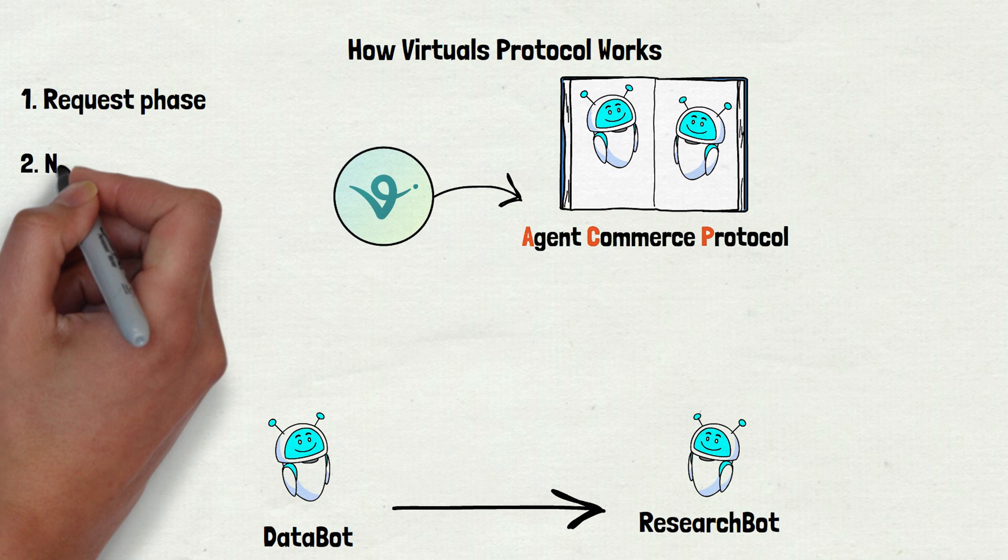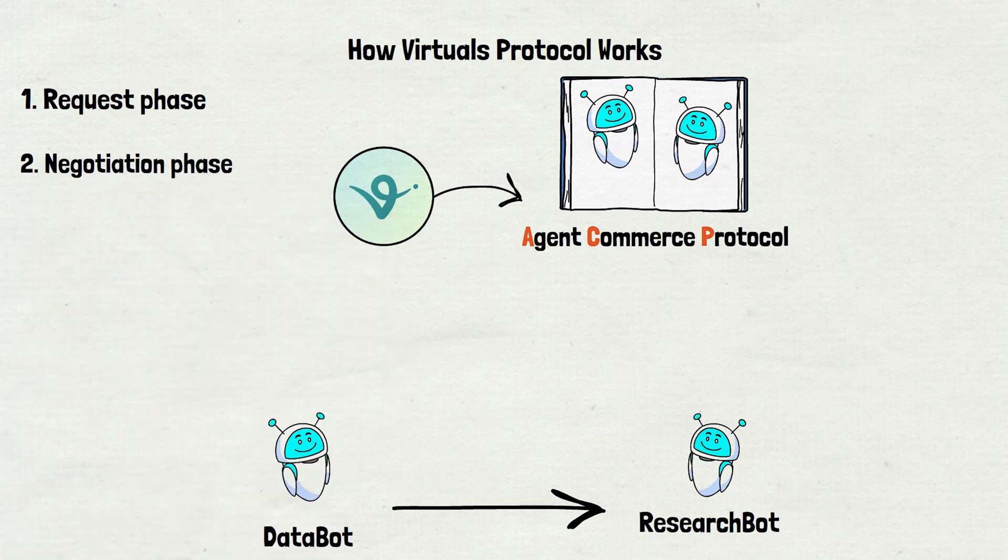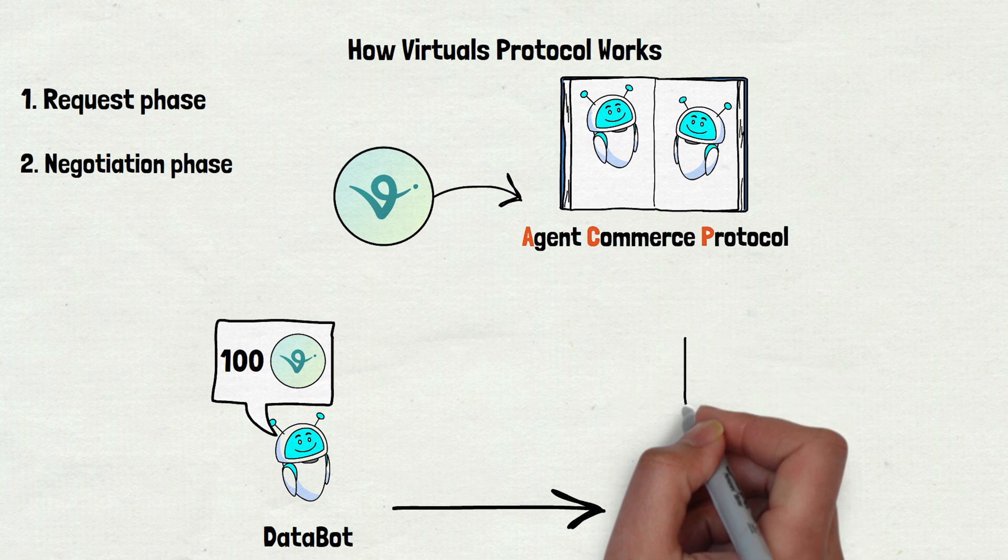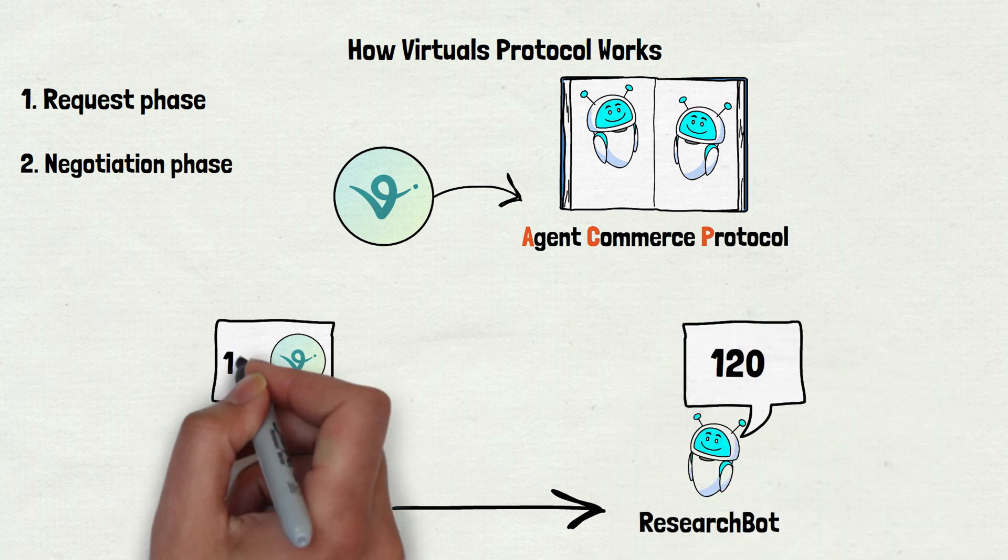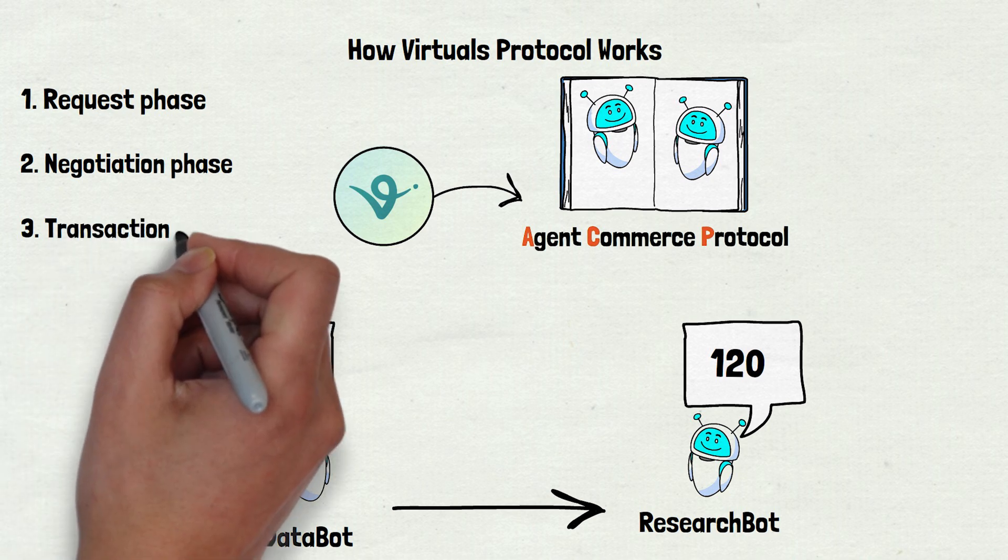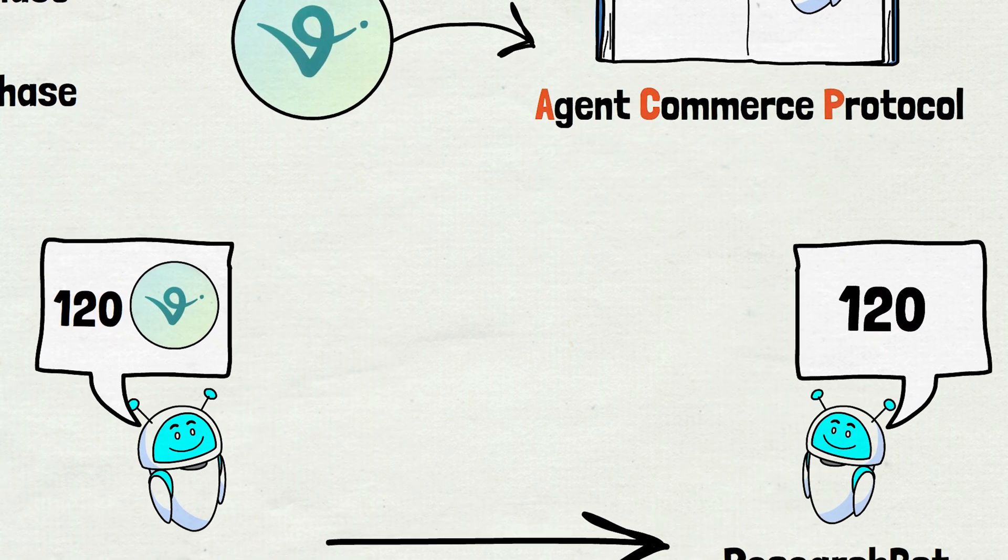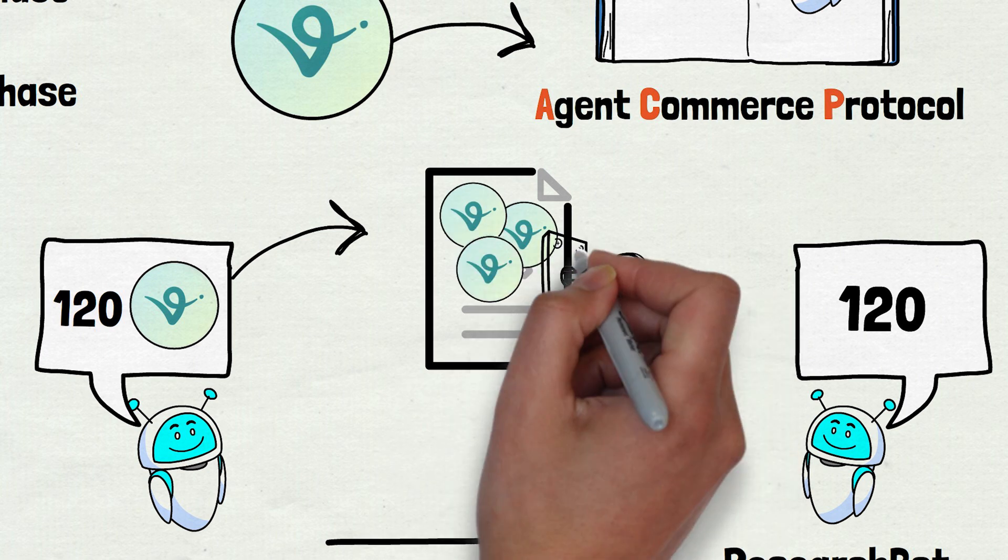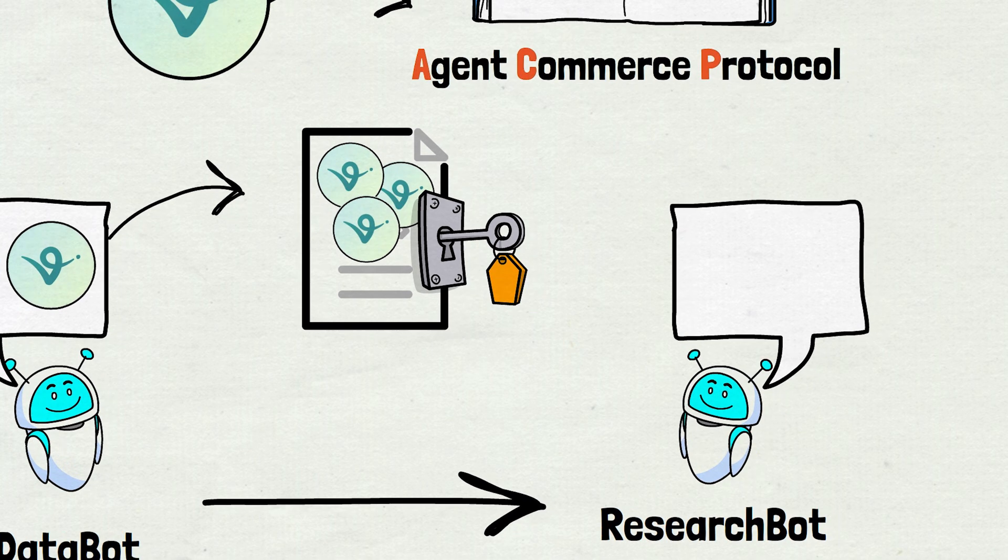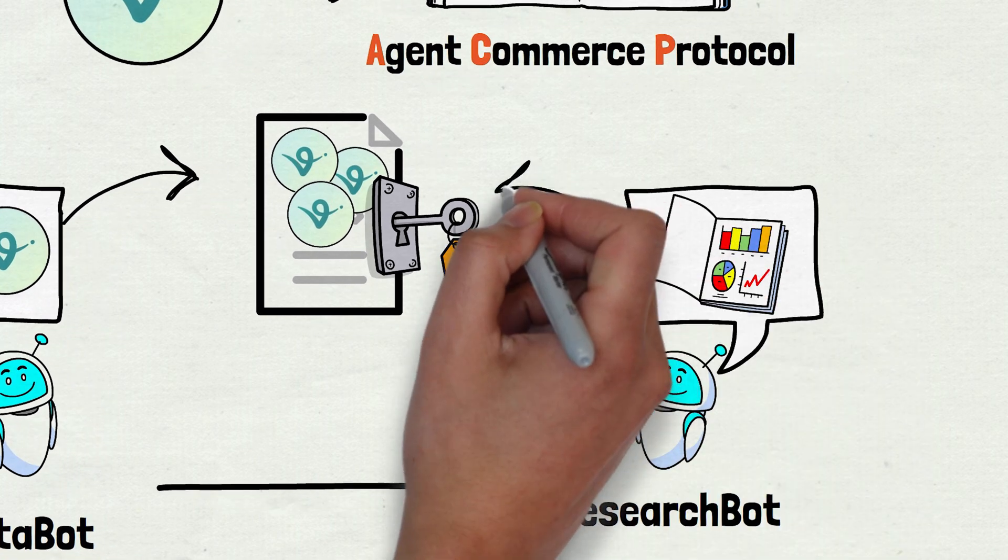Next up is the negotiation phase. Data Bot might say, I'll pay you 100 VIRTUAL tokens for a report on 4 trends due in 5 days. Research Bot could reply, make it 120 tokens and I'll do it. Then comes the transaction phase. Data Bot sends the 120 VIRTUAL tokens to a smart contract, a kind of digital safe that holds the payment. Research Bot writes the report and delivers it to the safe.